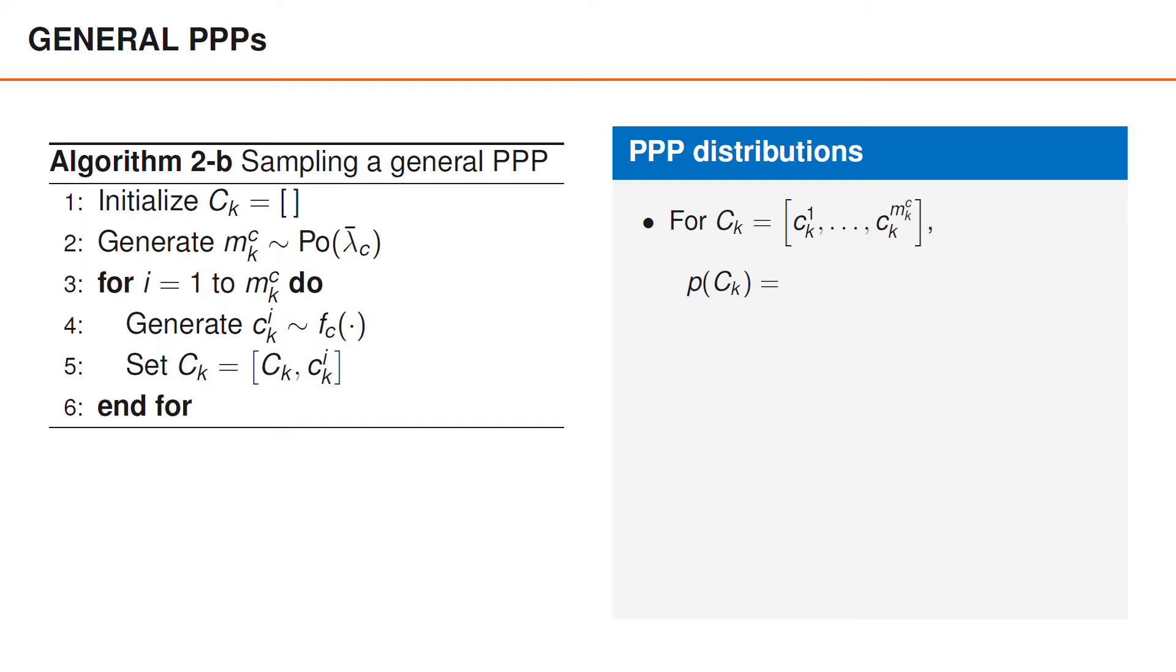We can now look at the Poisson point process distribution. Suppose we want to evaluate the distribution for a matrix containing mkc different vectors, denoted Ck1, Ck2, and so on. It turns out that the distribution of Ck is identical to the joint distribution of Ck and mkc. We will elaborate on this step on the homepage by providing a short proof, but intuitively speaking, the equation holds because mkc was in some sense already present, since it is the number of column vectors in Ck.